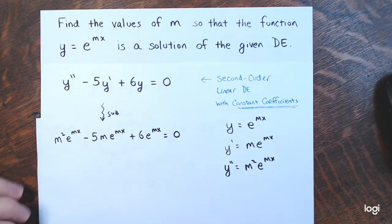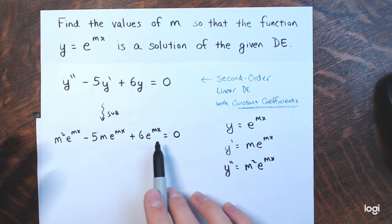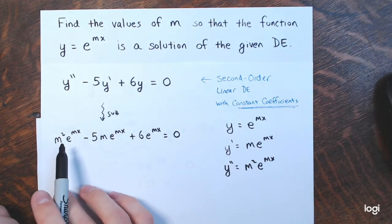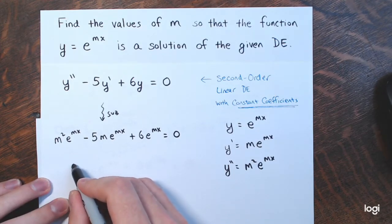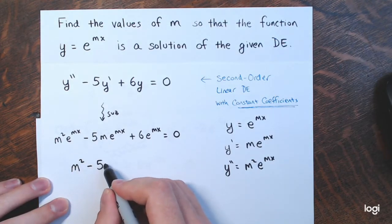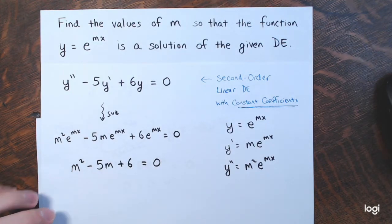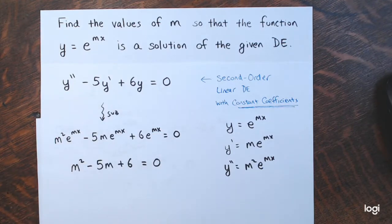Just as in the previous example, factor out e to the mx. You have e to the mx times the quantity m squared minus 5m plus 6 equals 0. Since e to the mx is never equal to 0, divide it out, and you're left with m squared minus 5m plus 6 equals 0. This is the auxiliary equation, or characteristic equation, corresponding to this differential equation.